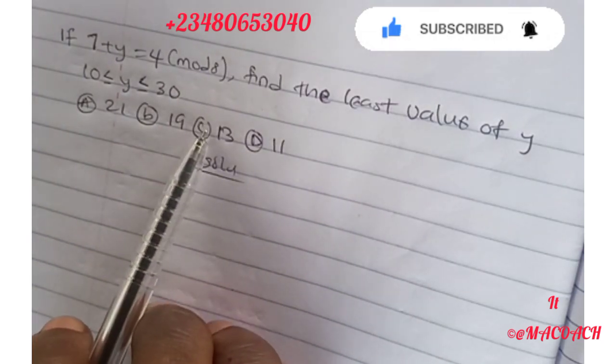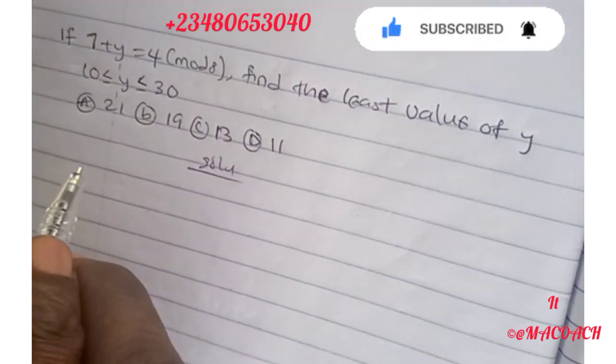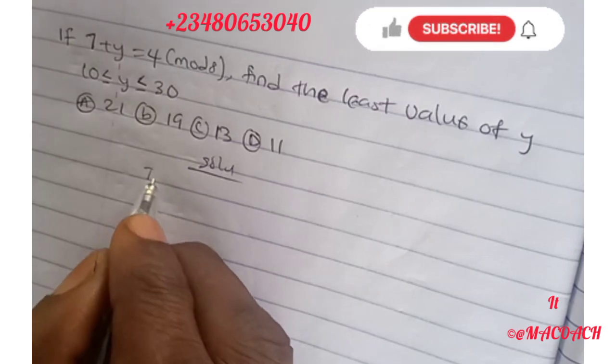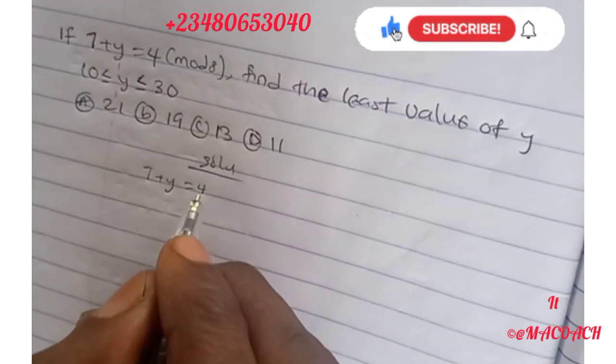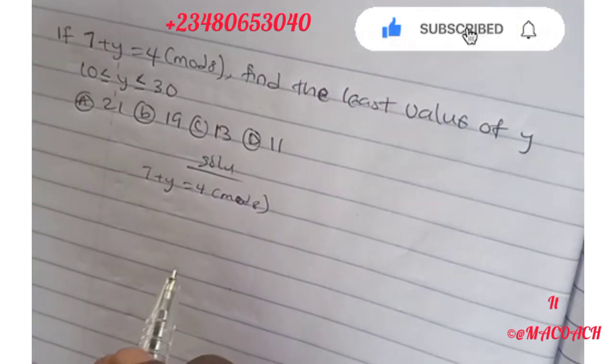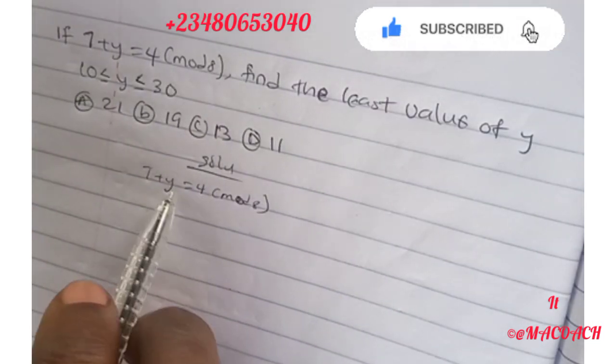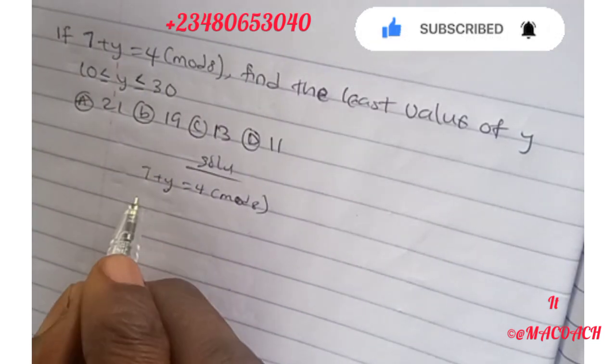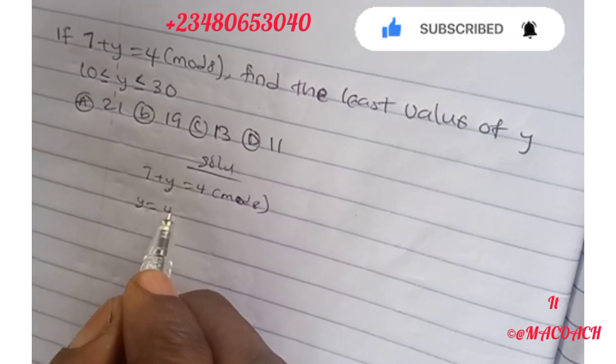How we solve this question is very simple. The first thing to do here is write our question out. We have 7 + y = 4 (mod 8). Let's collect like terms. When you collect like terms, we have y = 4 - 7 (mod 8).